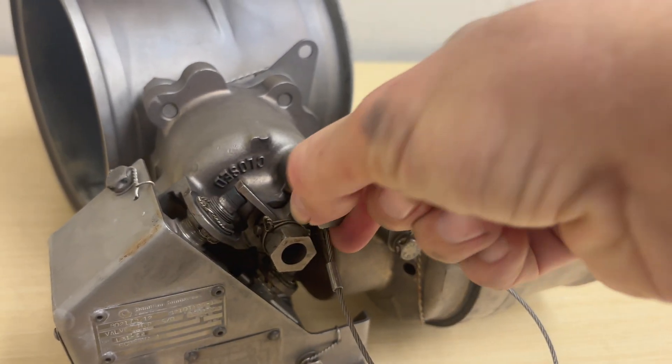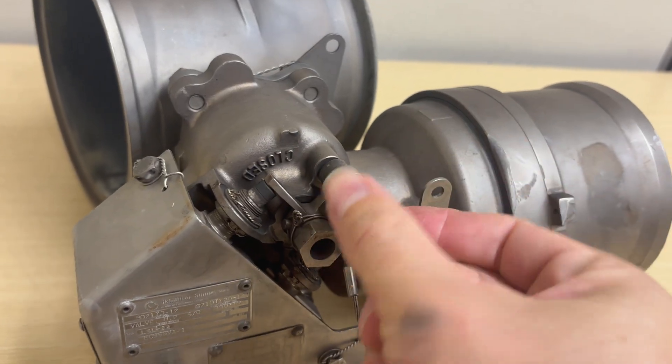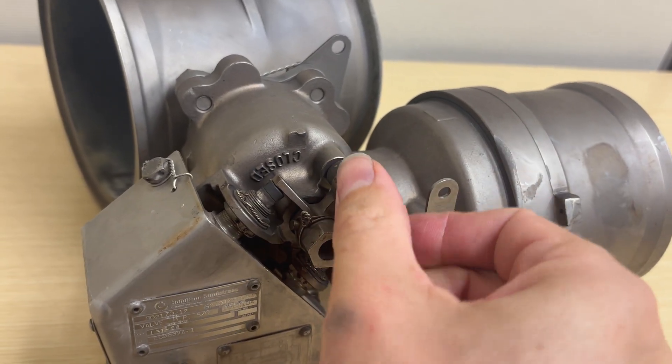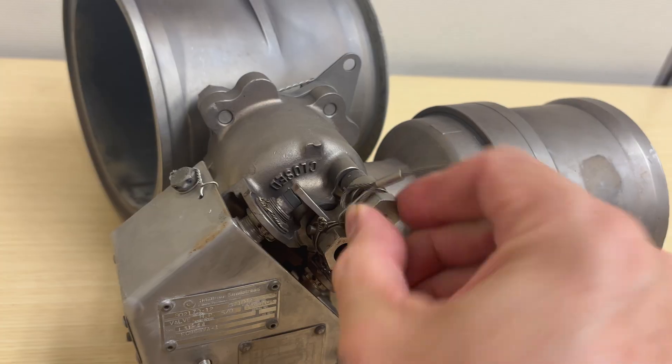And to reactivate the valve, you remove the bolt and place it back into the air chamber. And then the valve is ready to go again.